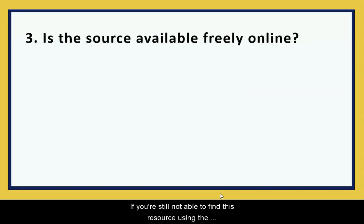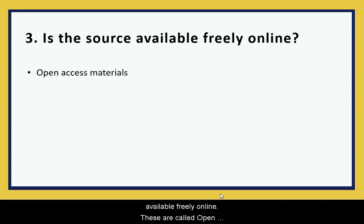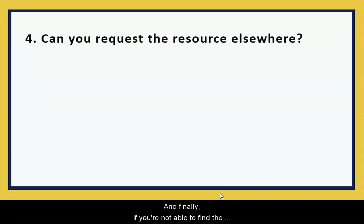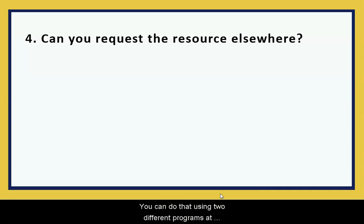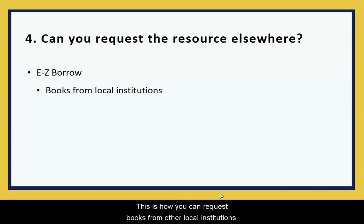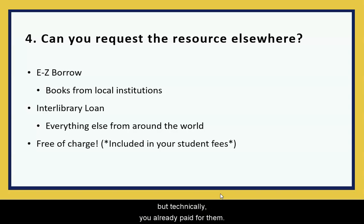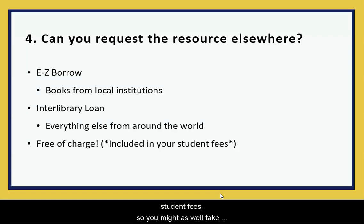If you're still not able to find the resource using the library's databases, you can see if it's available freely online — these are called open access materials, often found in online repositories or archives. And finally, if it's not freely available online, you can request it through two programs at Snowden Library: EasyBorrow, for requesting books from other local institutions, or Interlibrary Loan, which lets you request pretty much anything from libraries around the world. These programs are free now because you already paid for them with your student fees, so you might as well take advantage of them.